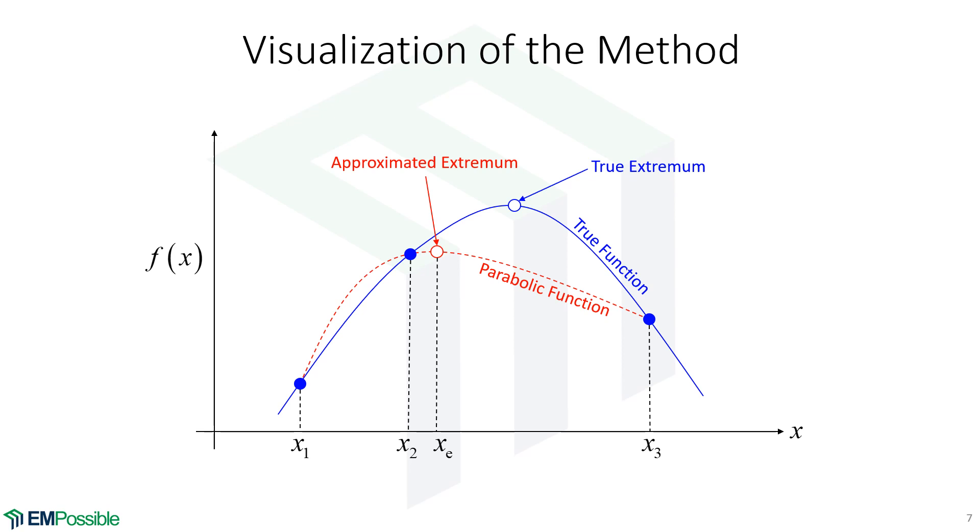So here's a visualization of how this is working. Let's just say our true function is in the blue line. And so we have a true extremum here. Then we pick our three points that are spanning this extrema. We're showing these with these blue dots. If we fit those blue dots to a polynomial, in fact, this is the polynomial that we're getting. And so if we find the extrema of this polynomial, we end up here. And so there's an error there.